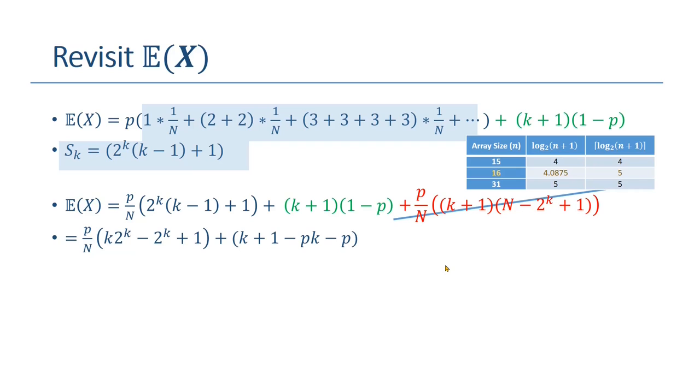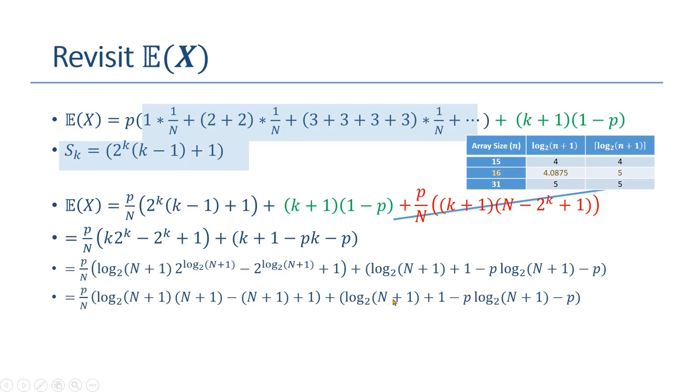Next, we expand this expression and find the solution. Remember, k is log n plus one base two. After solving this, we will get something close to p log n base two. p is just a probability constant which can be removed to get the final big O order. The big O order of the average case time complexity is log n base 2.